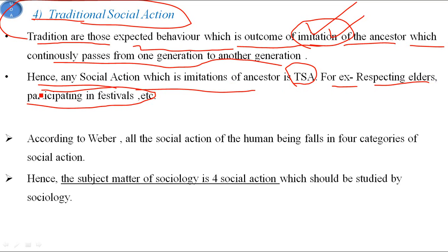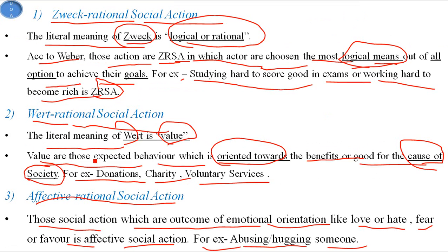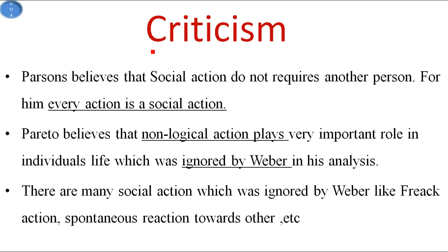According to Weber, all social actions of human beings fall into these four categories: Zweckrational, Wertrational, Affective, and Traditional social action. The subject matter of sociology is therefore the study of these four types of social action.